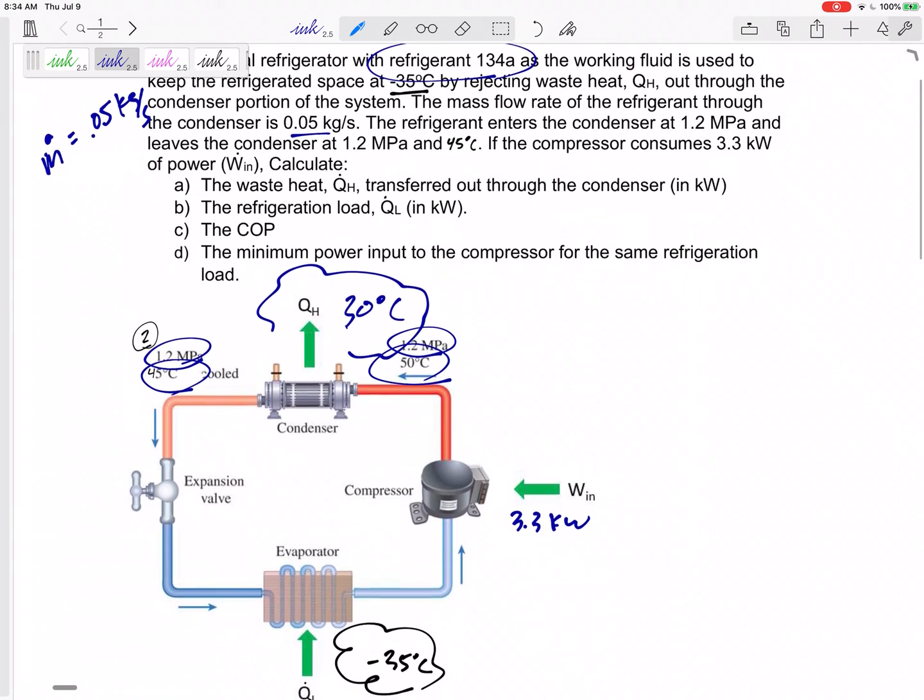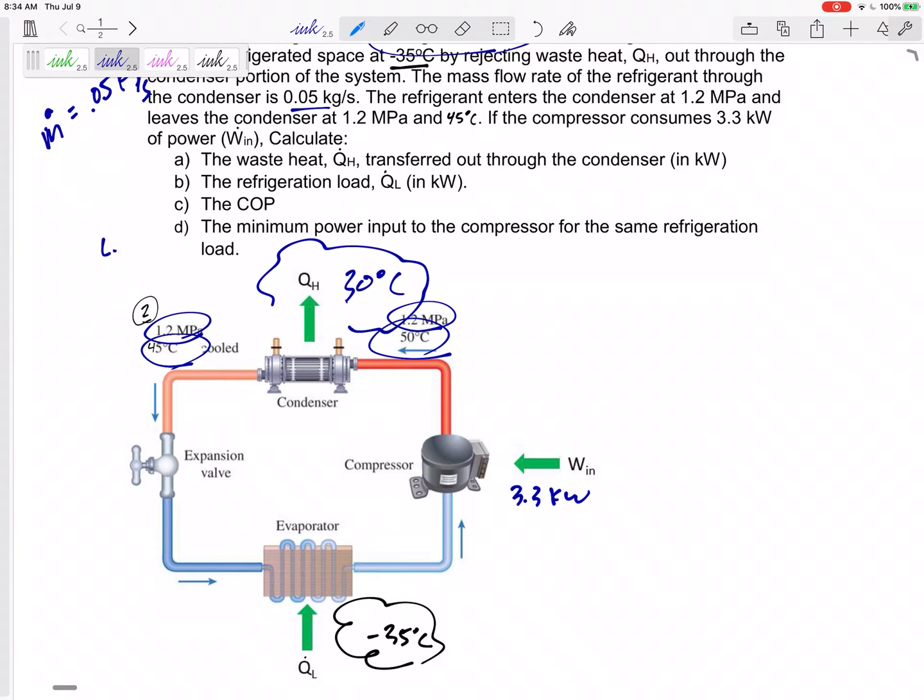The QH, the QL, the COP. And we're going to do part D later because we haven't talked about the minimum power. That would be if this was an ideal compressor, a Carnot or a reversible. We'll talk about that later.